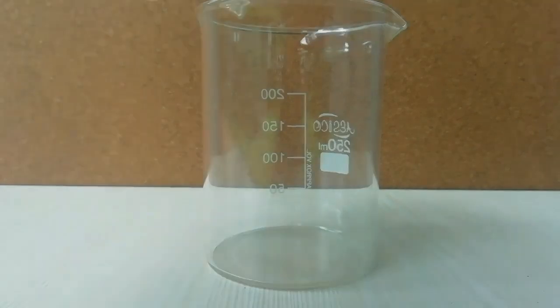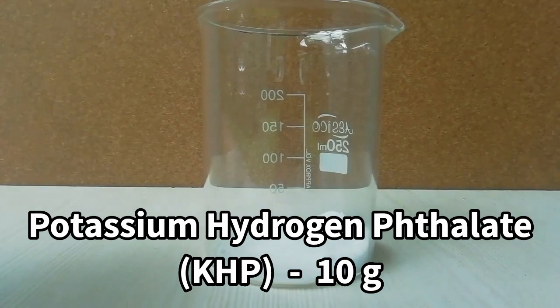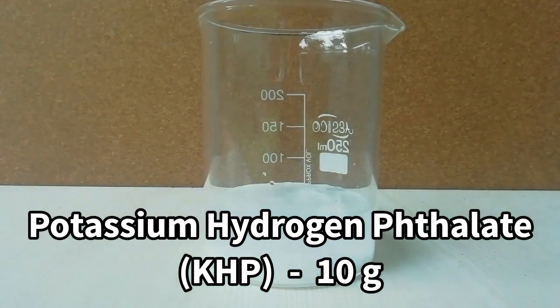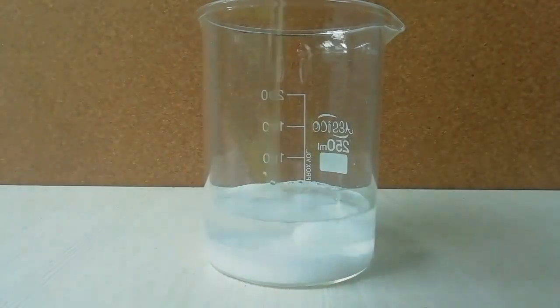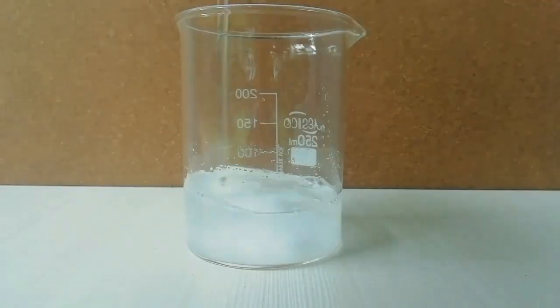Now, I weighed out 10 grams of potassium hydrogen thalate and add 50 ml of warm water. It was not enough to dissolve all the KHP.